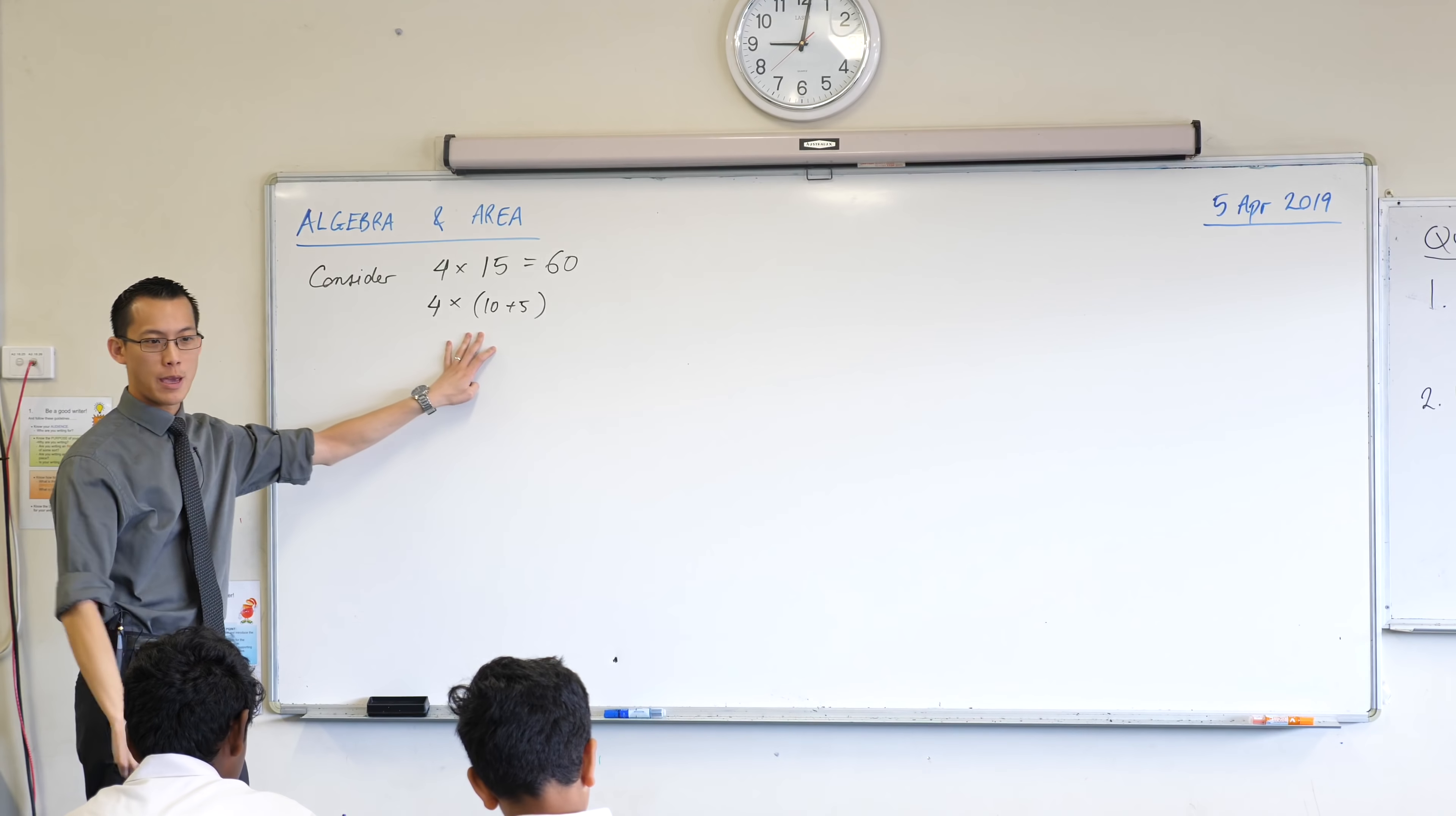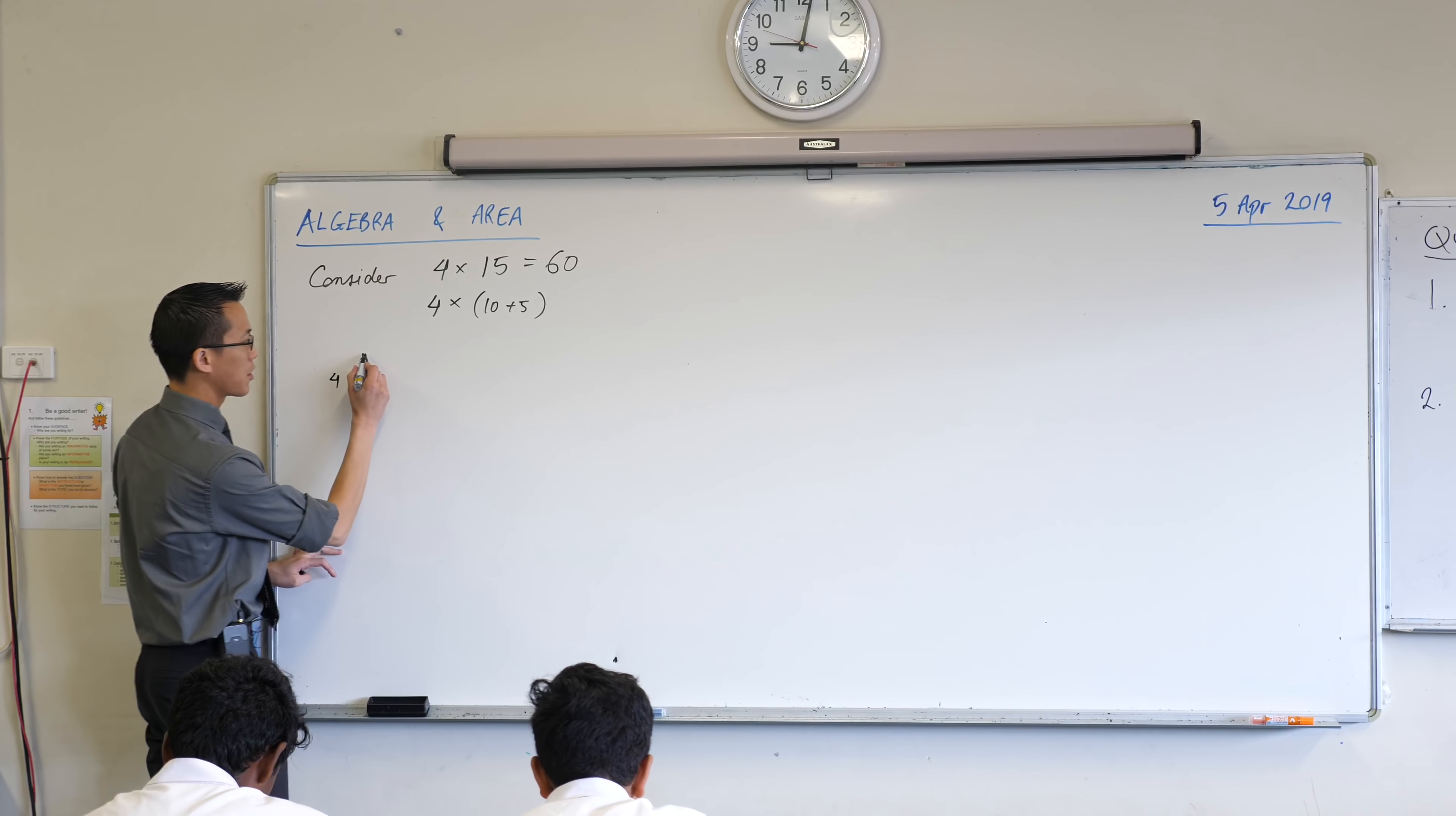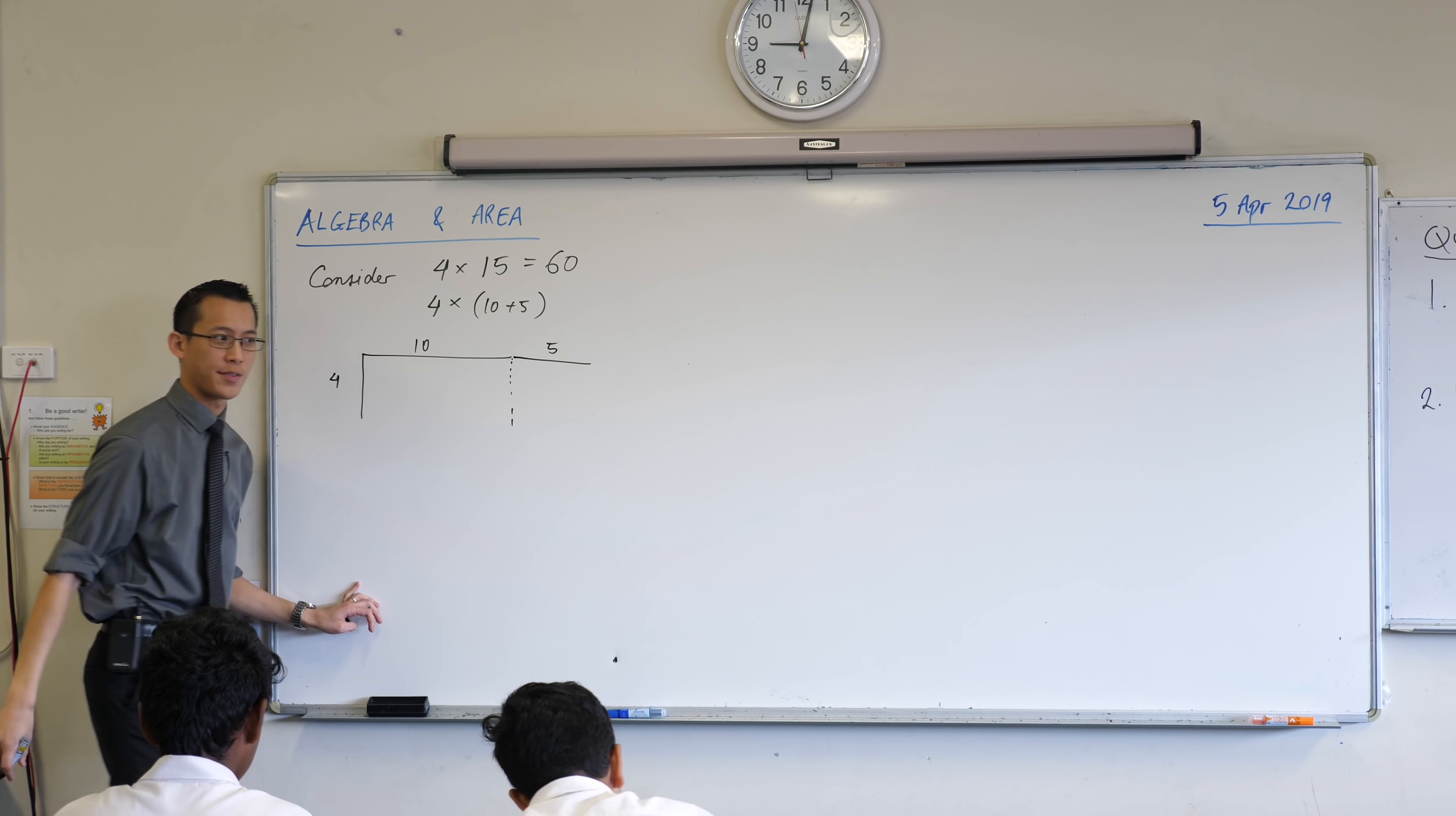Now, what I'd love you to do with me if you've got a ruler there is, can you draw for me a rectangle that represents this? 4, I'm going to call this 4 units high, and then I'm going to go 10. You can measure that across, and then I'm going to go, I'll just put some dots down there, and then I'm going to go another 5. So I'm going to call this 10 and this 5.